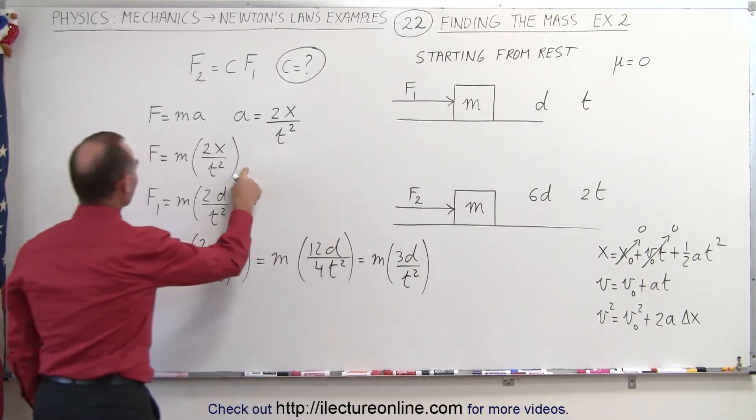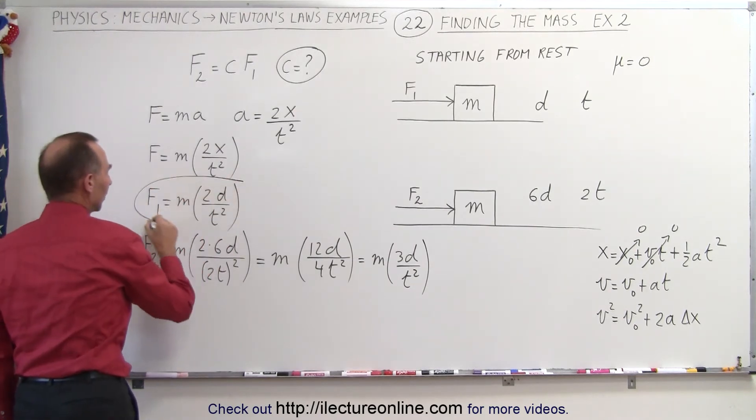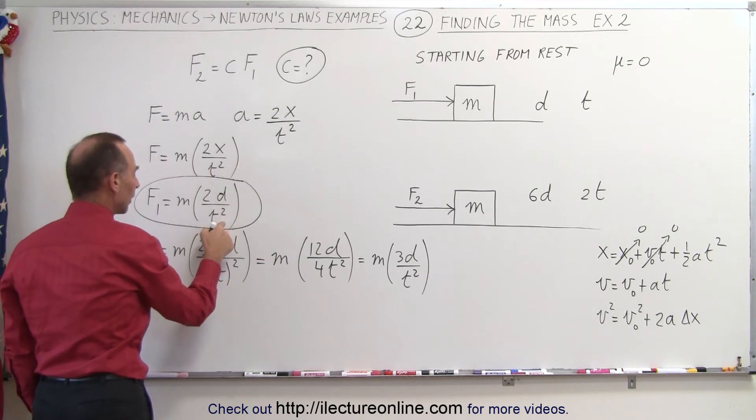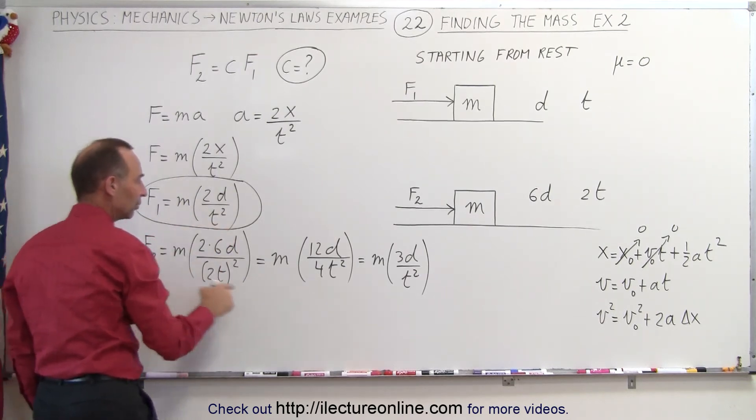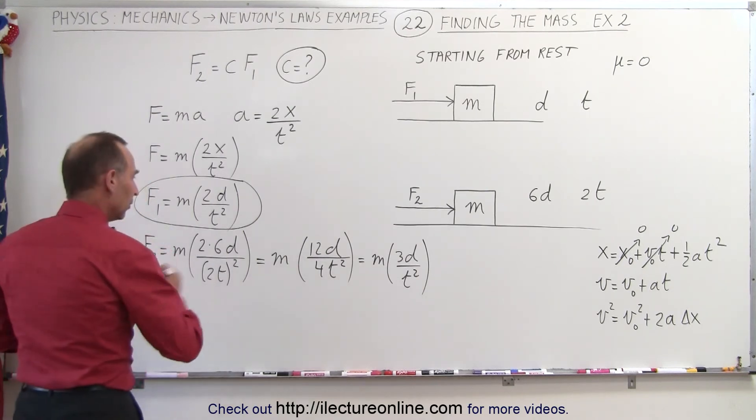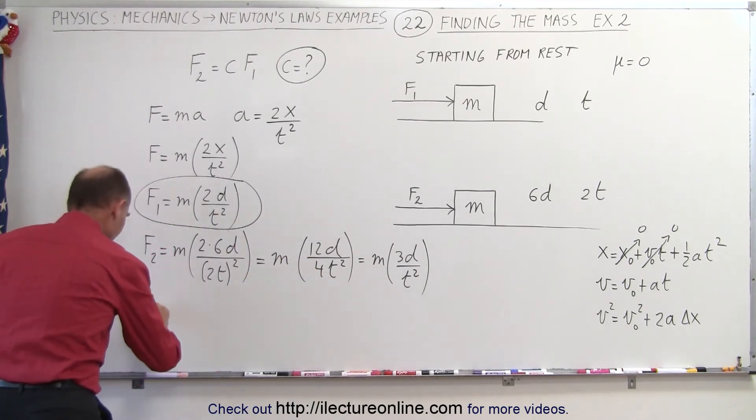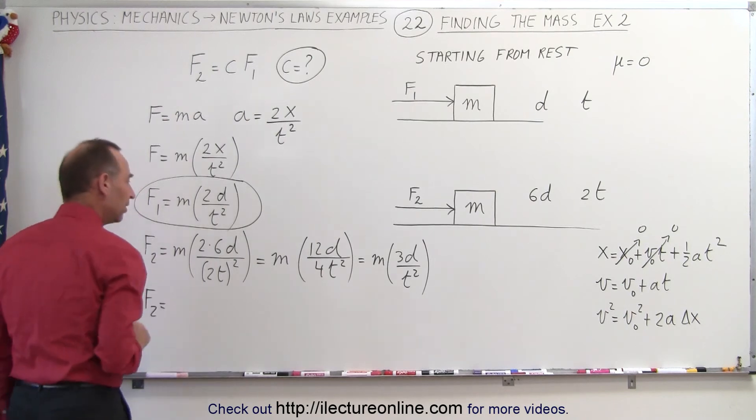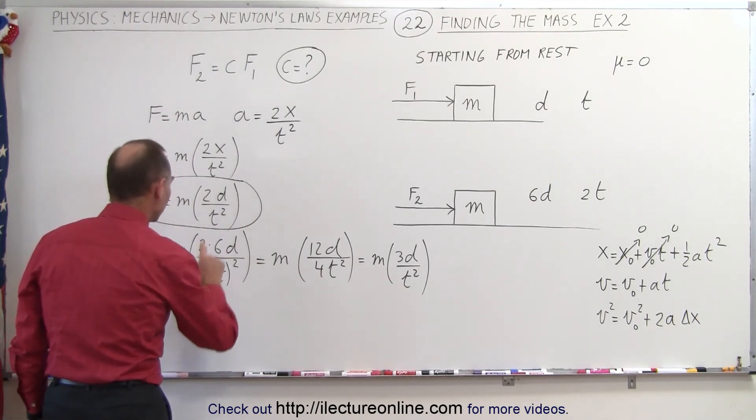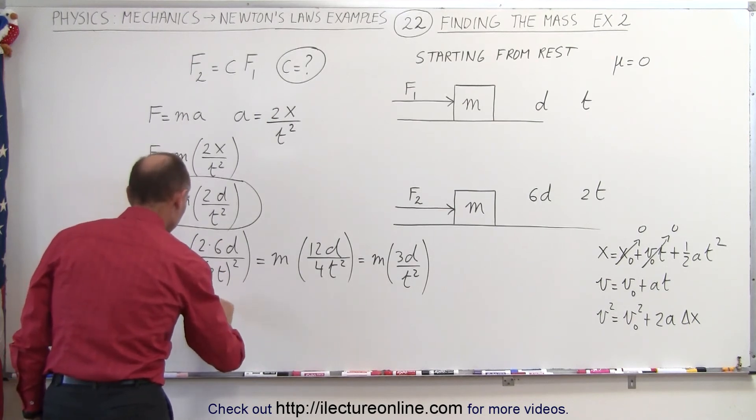And now let's compare that to what we have over here for case one. For case one we have f1 is equal to m times 2d over t squared, and here the force f2 is equal to m times 3d over t squared.